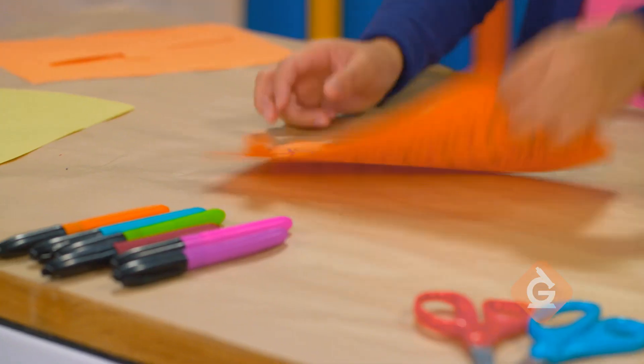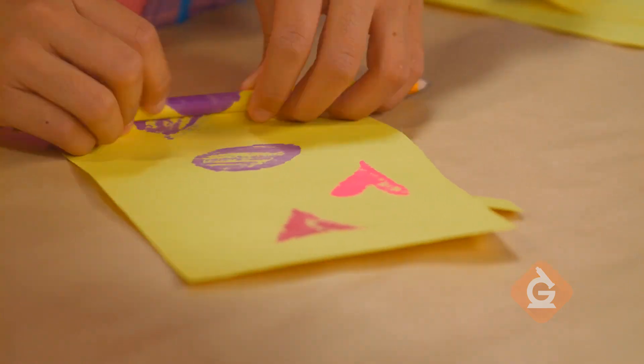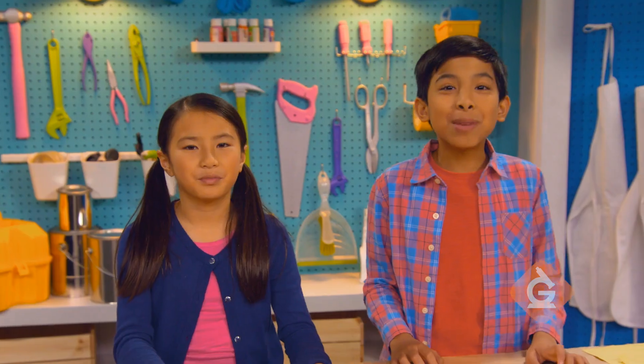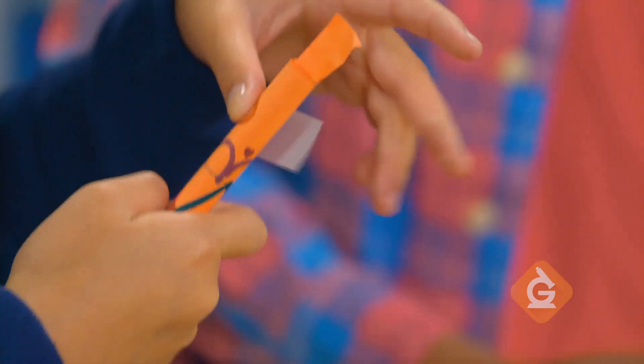Next, flip it over and use a pencil to roll up the paper. Tape it to make a tube with a small flap on the end.